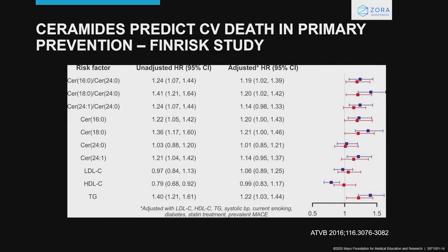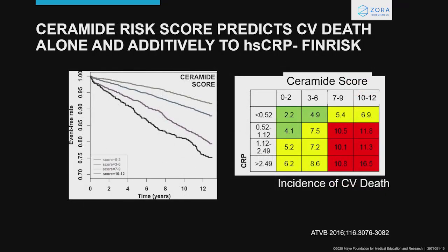How about ceramides in primary prevention? There are not that many studies that looked at ceramides in primary prevention. The majority of these studies have been performed in northern European populations, such as the FINRIS study. In this trial, cardiovascular death was associated with elevated ceramides in a cohort of patients without known coronary artery disease at baseline. Moreover, when they looked at the ceramide score and compared it to an established biomarker of cardiovascular risk — high sensitivity CRP — there was a clear additive effect of the ceramide score to high sensitivity CRP.